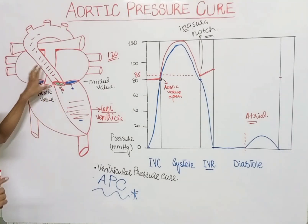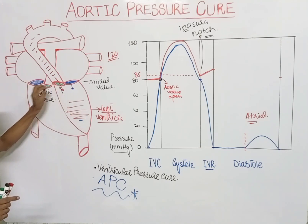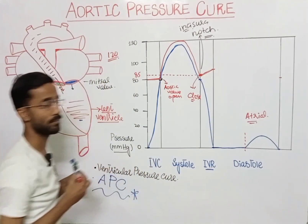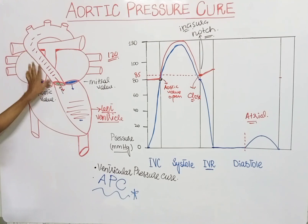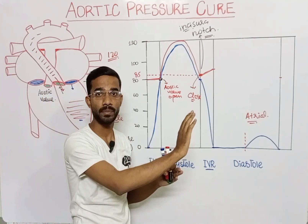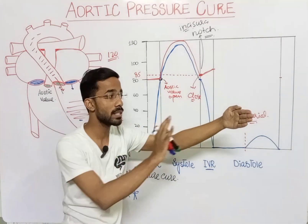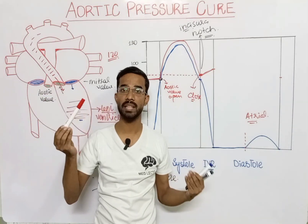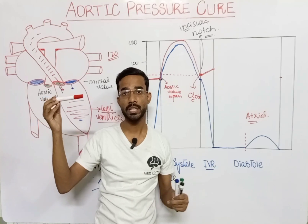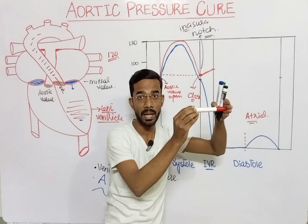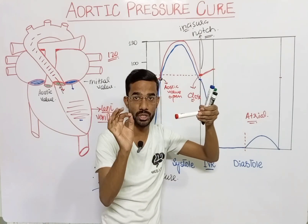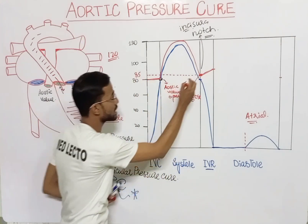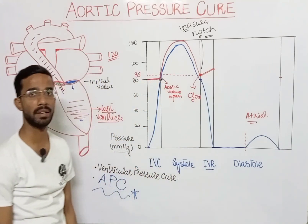Before closure, some blood moves back into the ventricle. When the aortic valve closes, the sudden stopping of blood flow causes a brief pressure increase — similar to suddenly stopping a rapidly moving fluid, which transiently raises pressure. So the pressure briefly increases at the point of aortic valve closure during isovolemic relaxation.